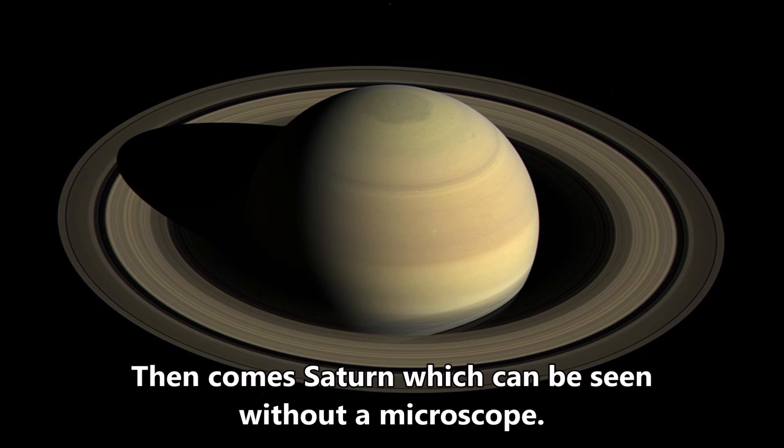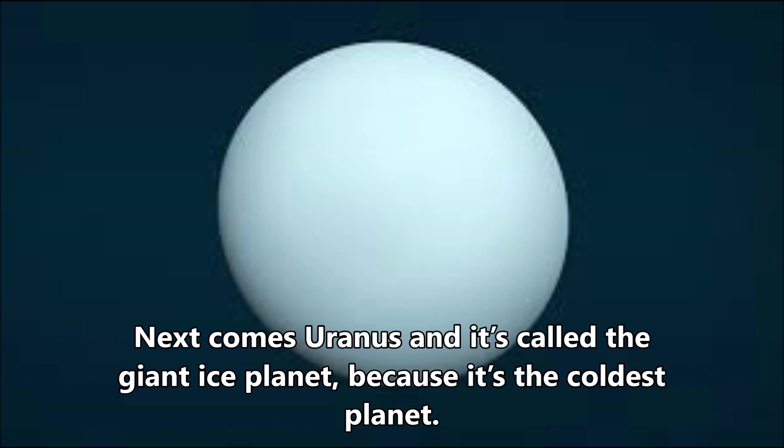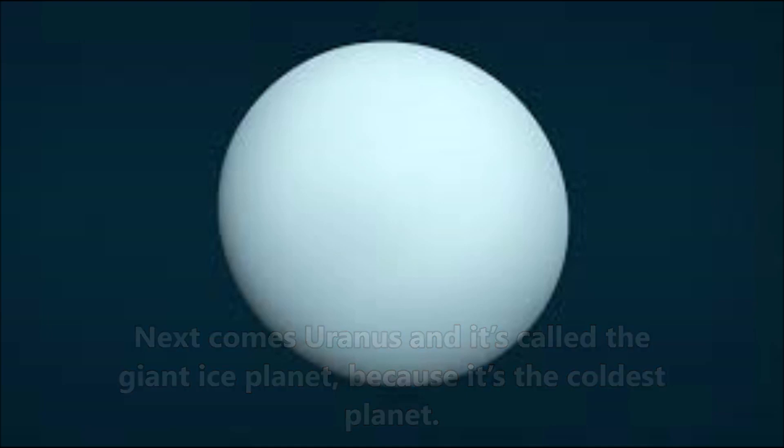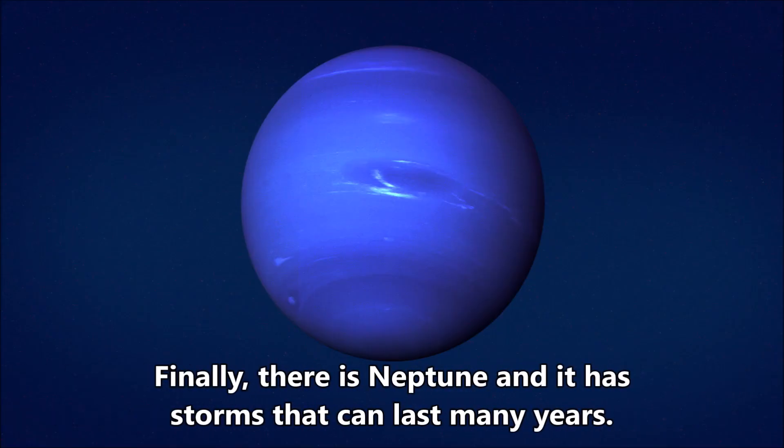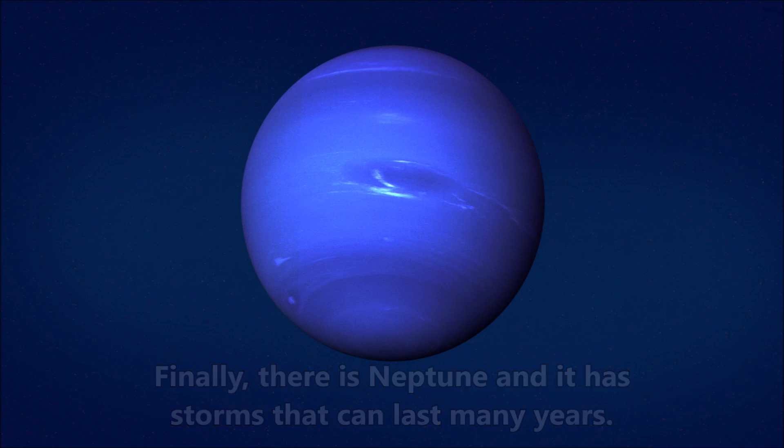Then comes Saturn, which can be seen without a microscope. Next comes Uranus, and it's called the giant ice planet because it's the coldest planet. Finally, there is Neptune, and it has storms that can last many years.